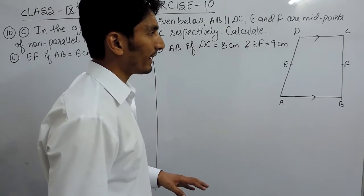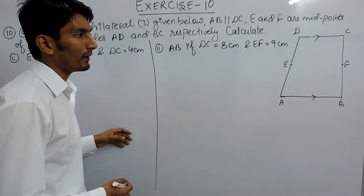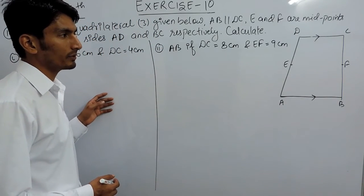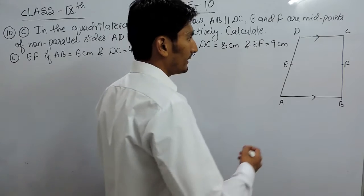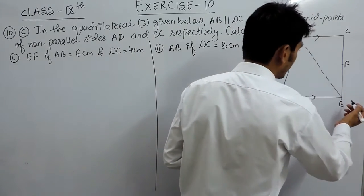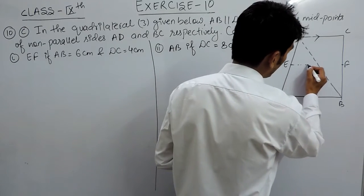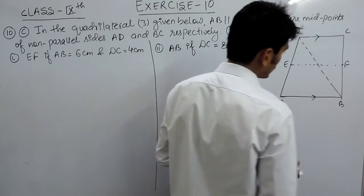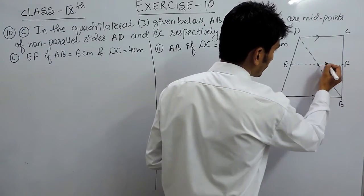This question is the same as the first and second part of question number 10. If I join the diagonal and draw a parallel line, this will be point O.